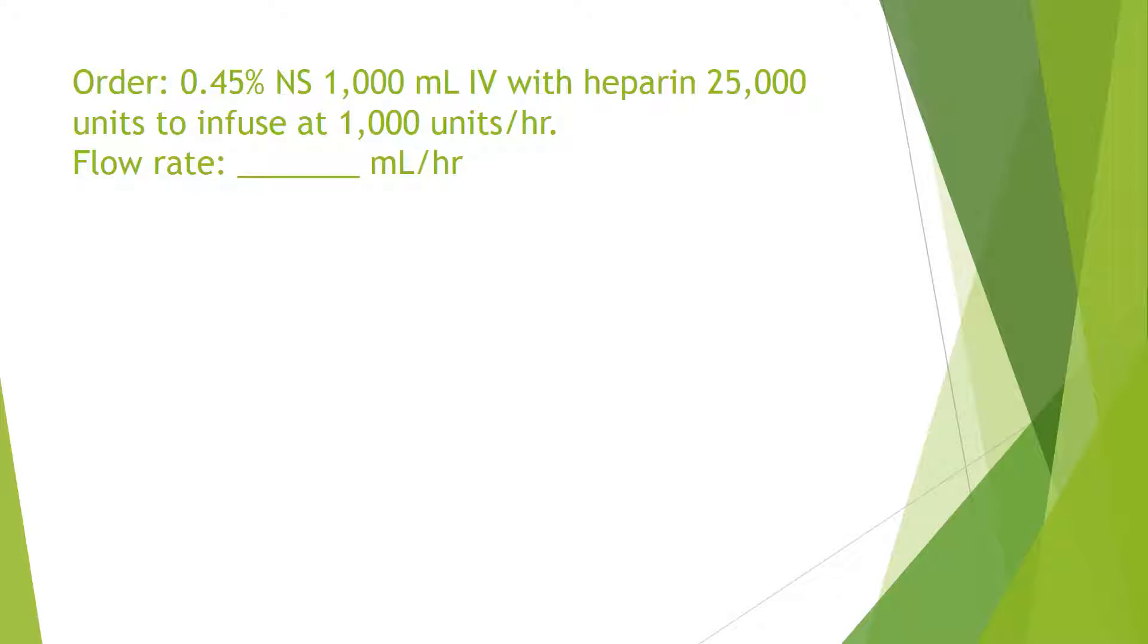This first question, the order calls for 0.45% normal saline 1000 milliliter IV with heparin 25,000 units to infuse at 1000 units per hour. And the flow rate is what in milliliters per hour. So that's what we're looking for. A lot of times, at least what I've found with working with students, particularly nursing students, is you just don't know where to put the values. And I found that it's helpful to circle important information and try and keep those values together. What this is stating here is that you have 1000 milliliters 0.45% normal saline. Now this 0.45% does not affect our calculation. So you don't need to worry about factoring that in. But what is important is this 1000 milliliters and then within that 1000 milliliters, we have our 25,000 units.